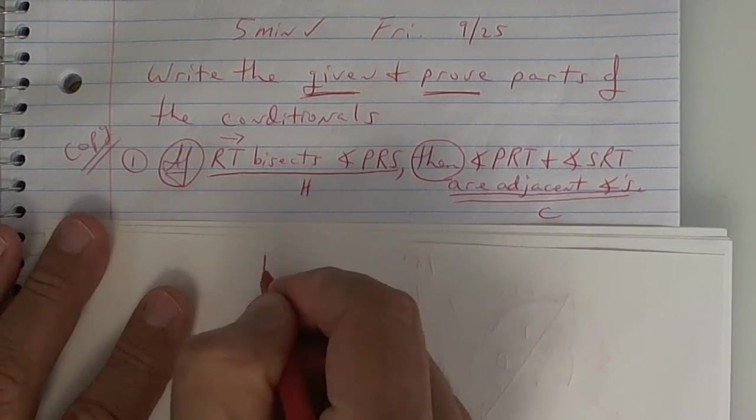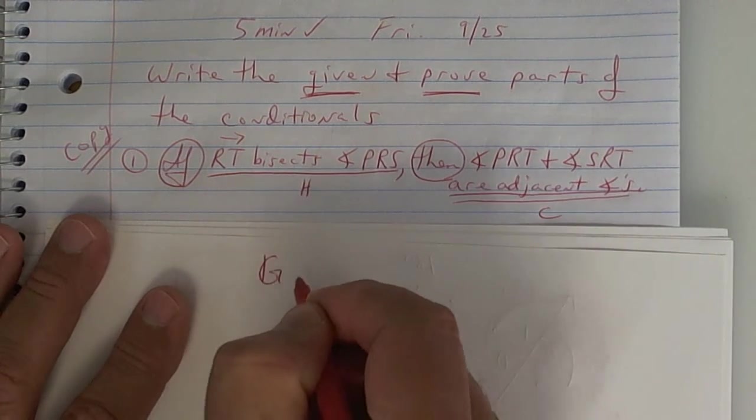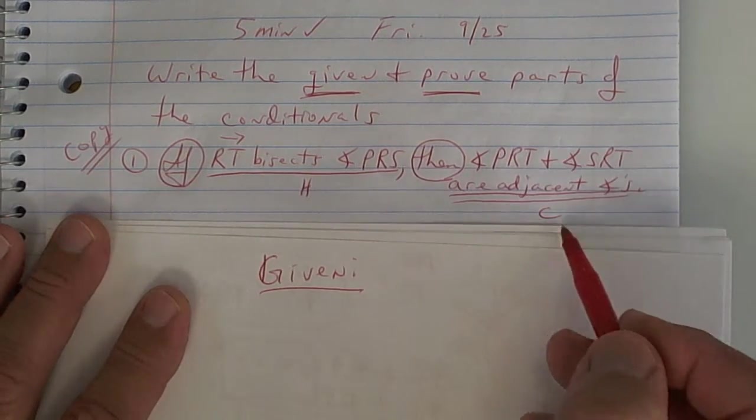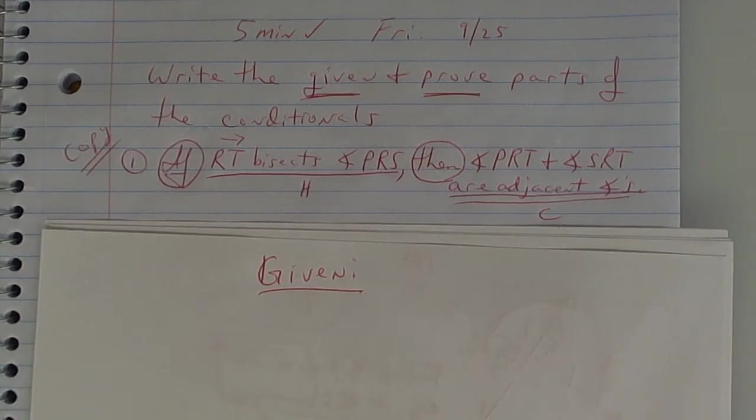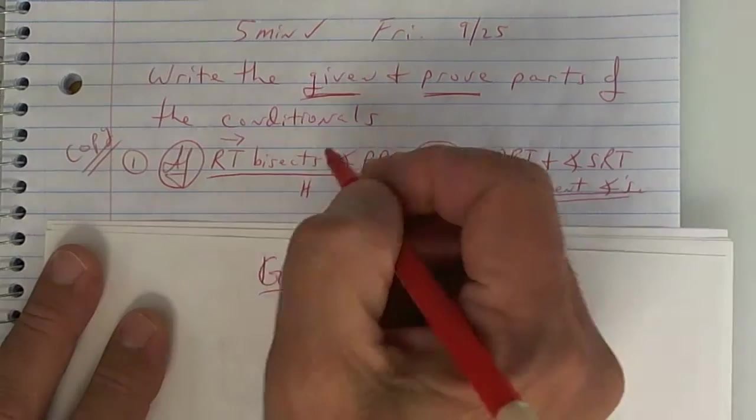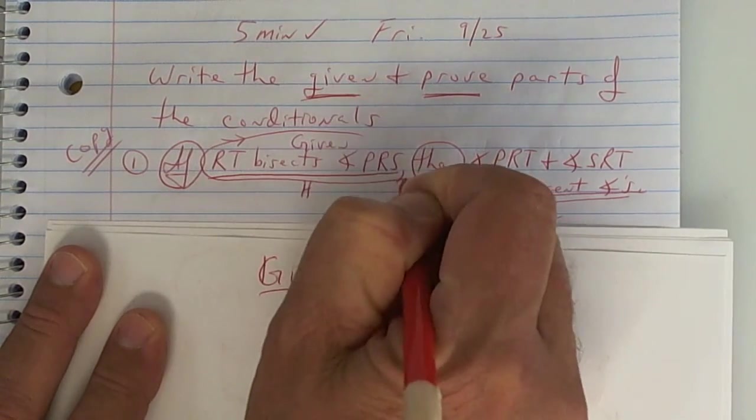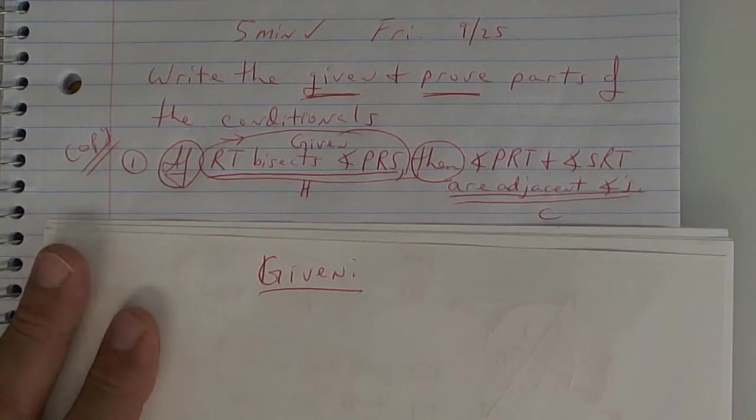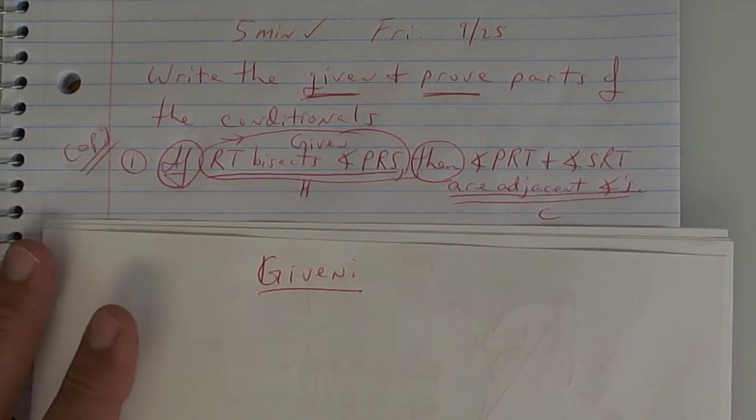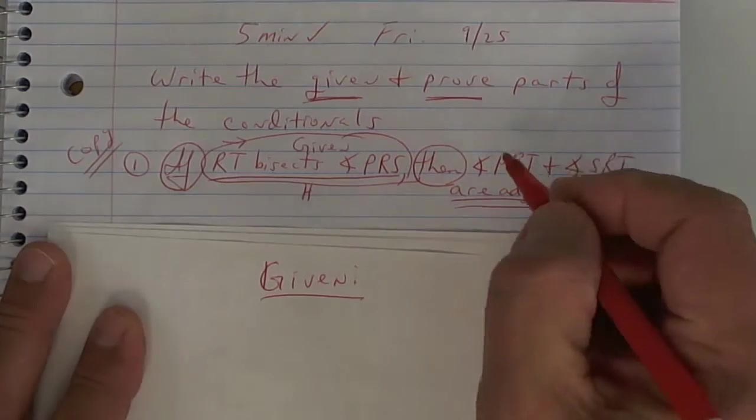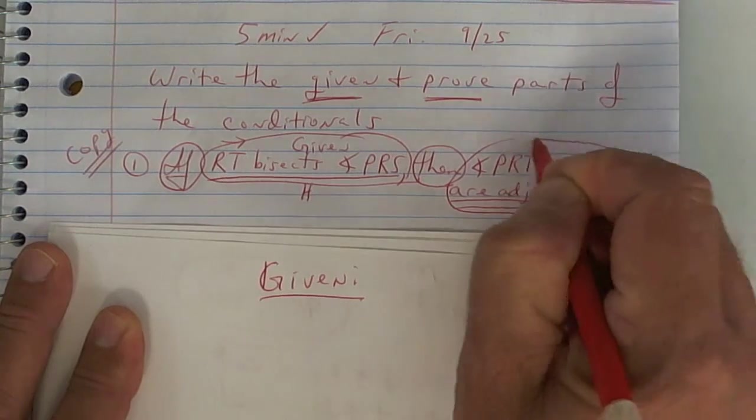Well, which part is the given part? Is it the hypothesis or is it the conclusion? Raise your hand if you think you know the answer. The hypothesis. So all it is is given. So on your paper, put given right here just so we don't have to rewrite it. And which part is the prove part? Conclusion. All right. So put prove. That's what we're trying to prove.